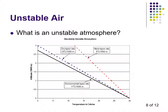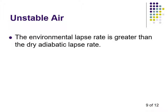An unstable atmosphere occurs when the environmental lapse rate — this black line — is greater than the dry adiabatic lapse rate. No matter how we lift up the parcel of air, whether the rate is dry or moist, the temperature of the parcel is always greater than the temperature of the surrounding environment. So the parcel is warmer than the surrounding air and will tend to rise — we call this an unstable atmosphere.